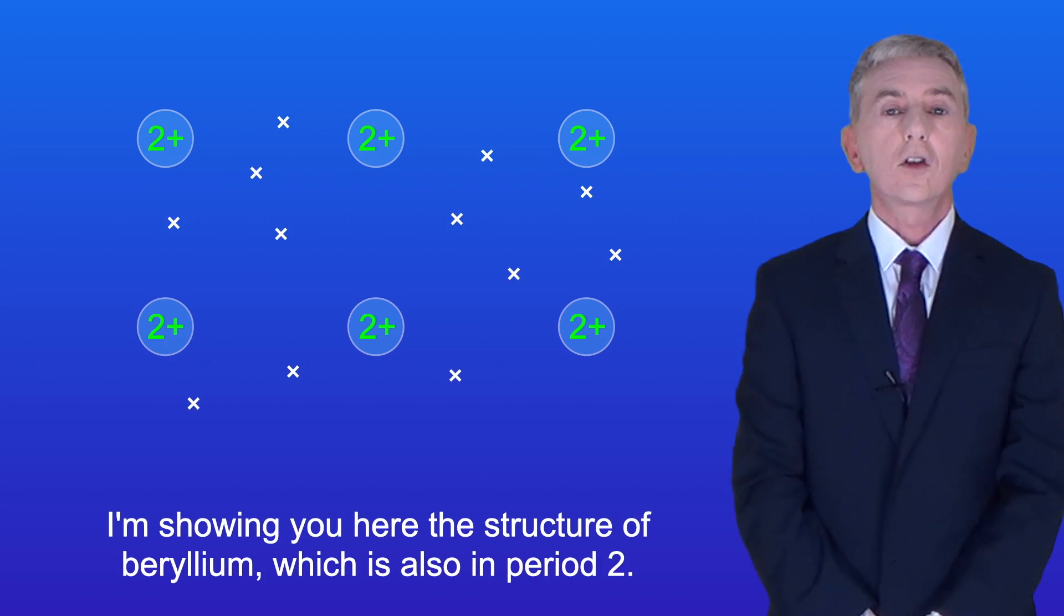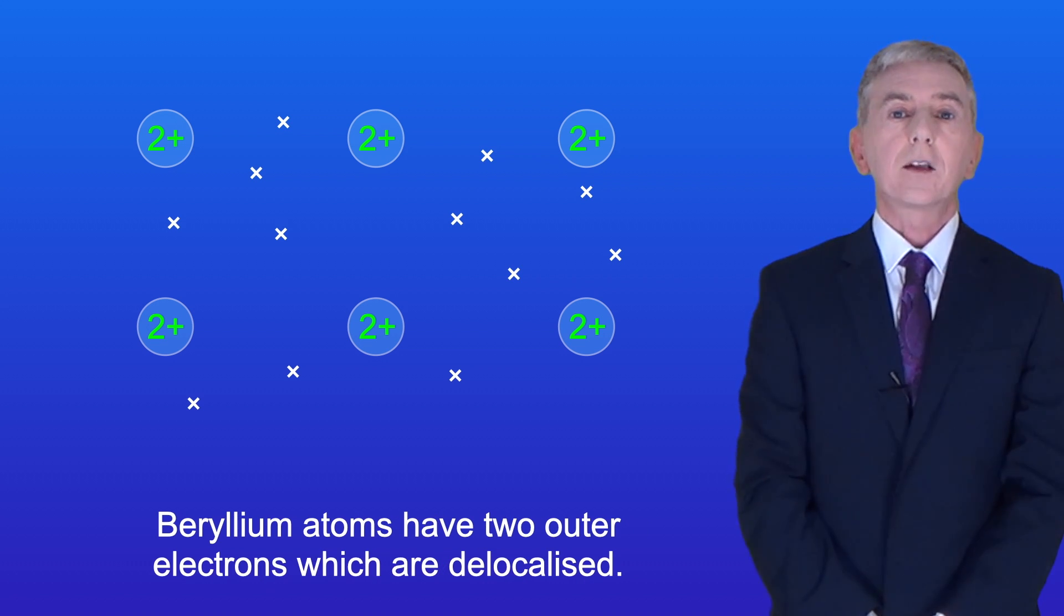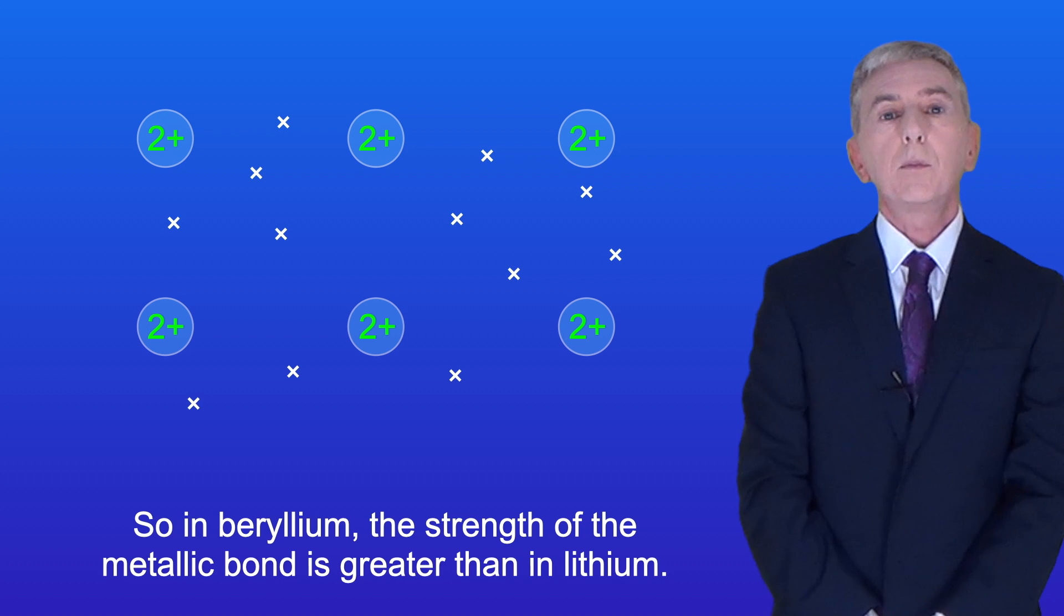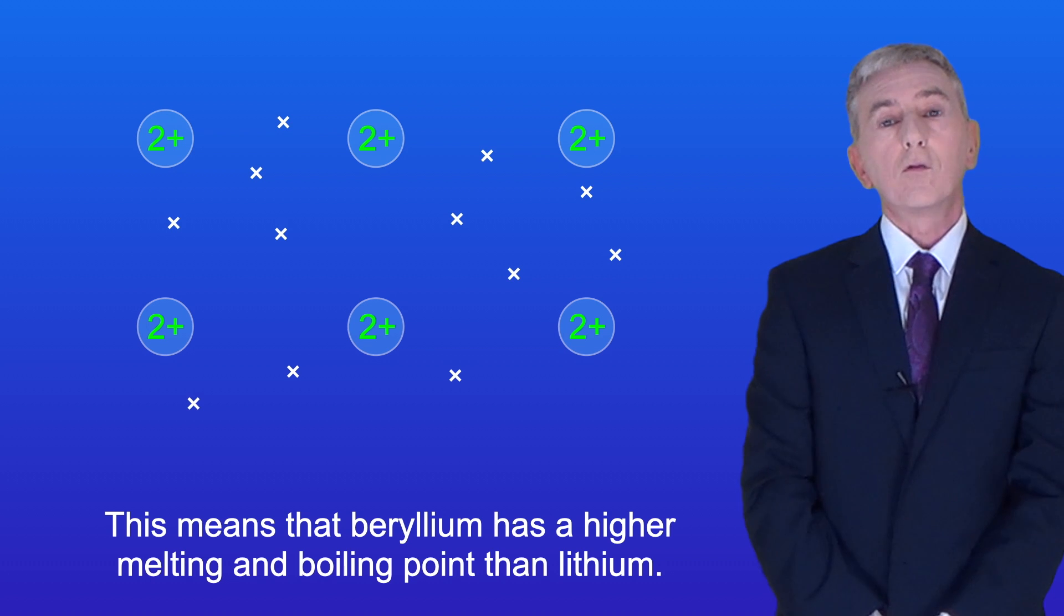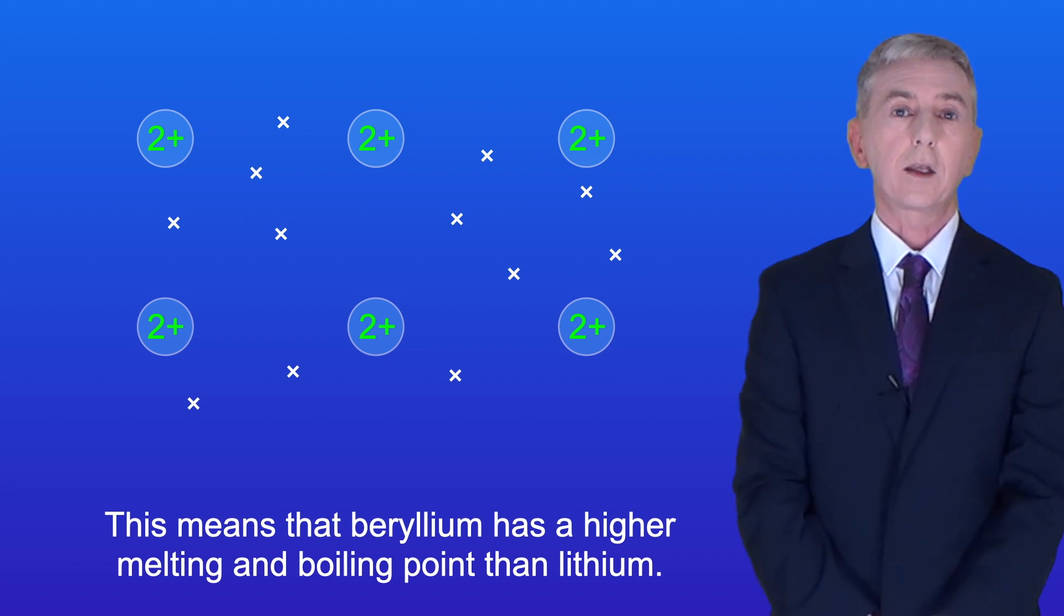I'm showing you here the structure of beryllium which is also in period 2. Beryllium atoms have two outer electrons which are delocalized. So in beryllium the strength of the metallic bond is greater than in lithium. And this means that beryllium has a higher melting and boiling point than lithium.